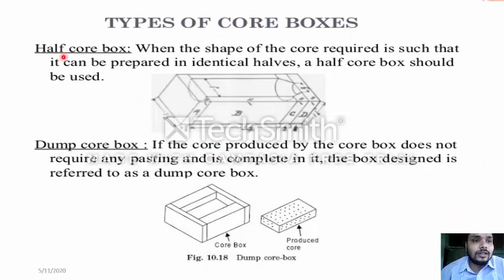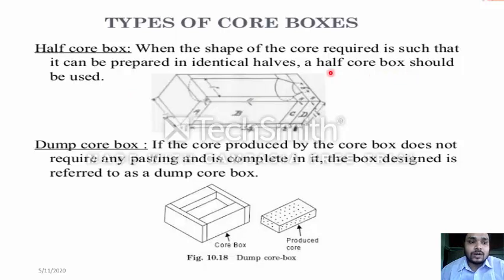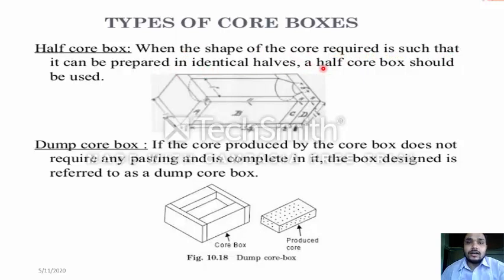Types of core boxes. First of all, the half core box. When the shape of the core required is such that it can be prepared in identical halves, a half core box should be used. You can use the half core box when the core can be prepared in identical halves — identical means one part of two, where two parts are made from one.